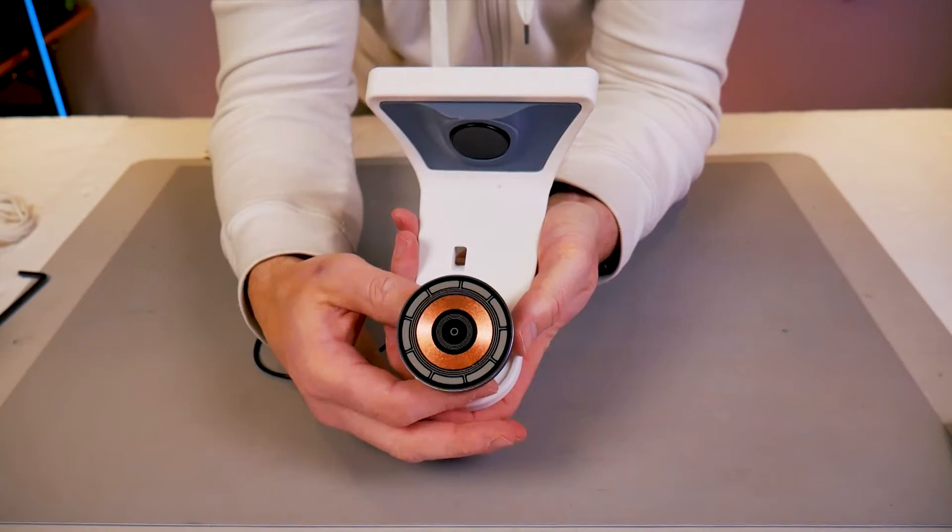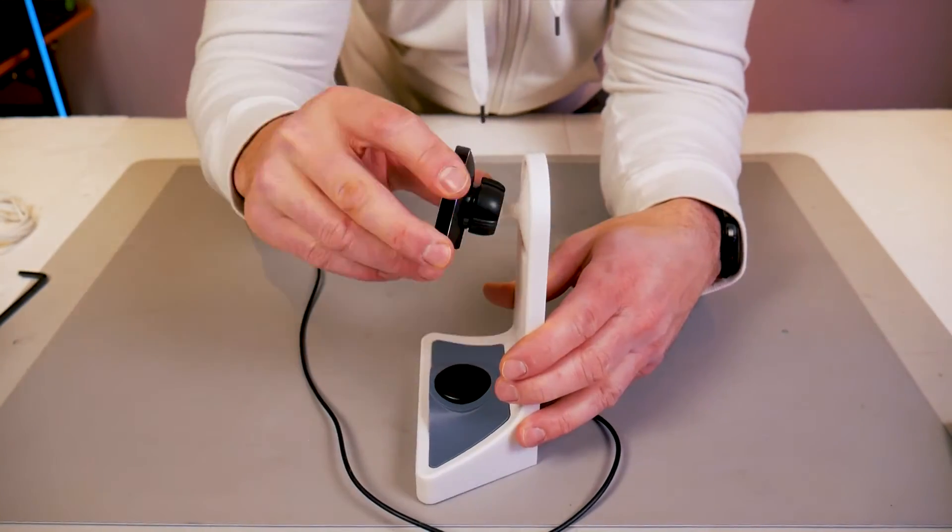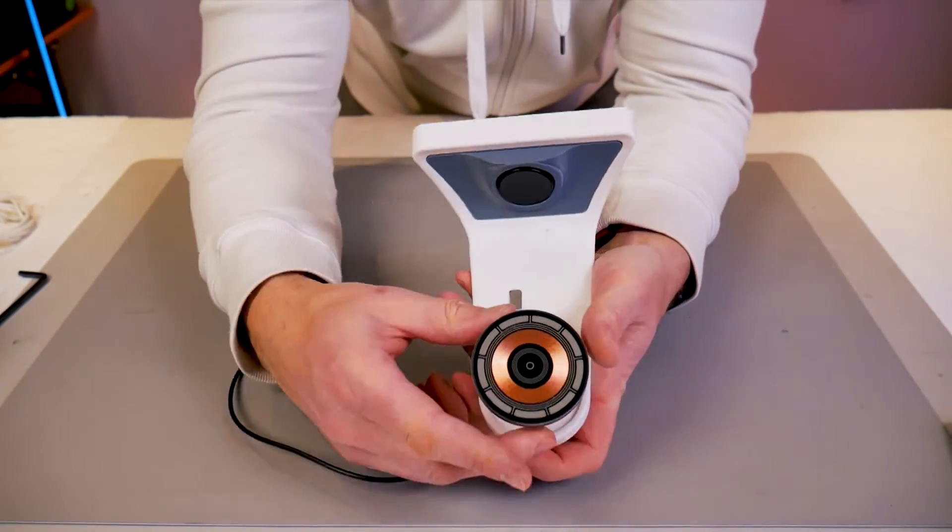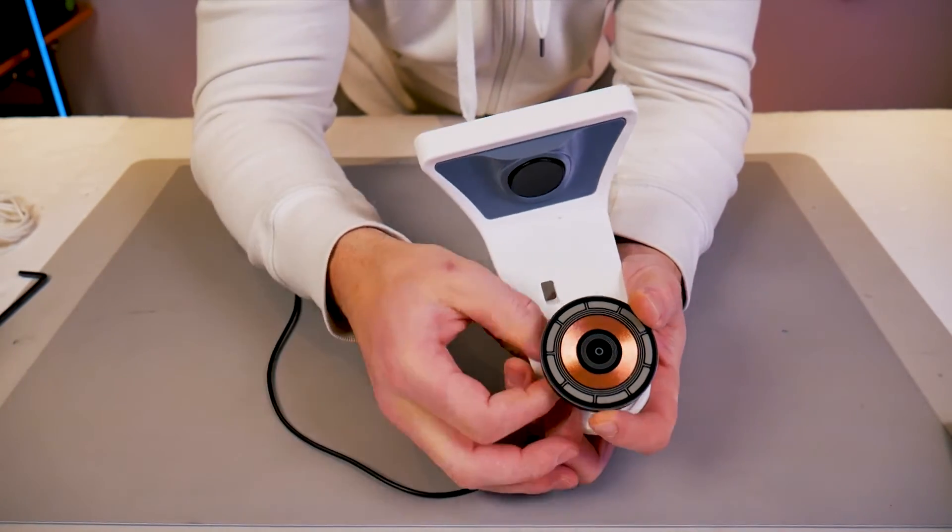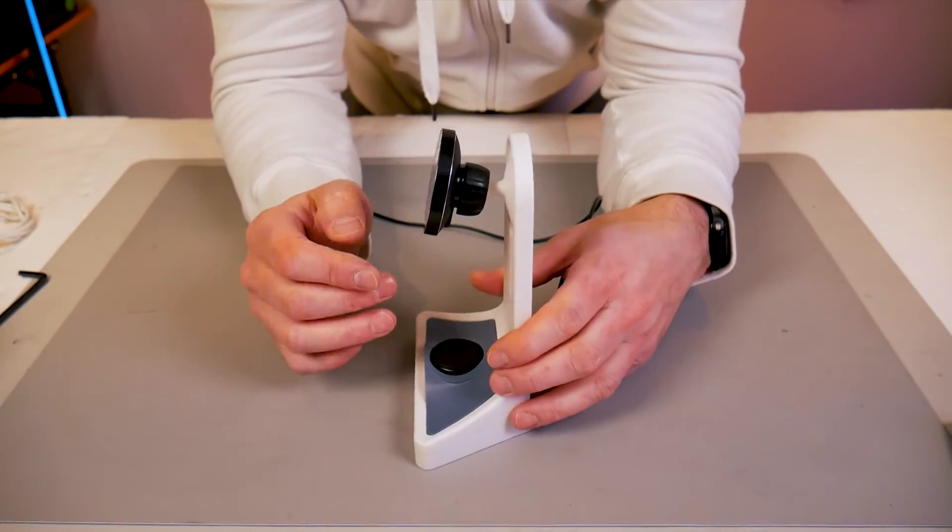On the bottom of the charger there is a USB-C port and that should be facing down. I've snugged up the nut on the back just to add enough friction where I can position the magnetic holder where I want my phone angled and then I can fully tighten that nut down.